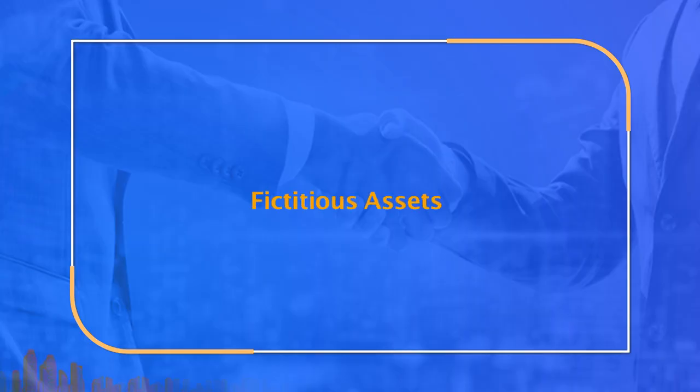Another class of assets is called fictitious assets. Fictitious assets have no physical existence or realizable value, but the company shows them as a cash expenditure in the books of accounts. They are a part of the asset side in the balance sheet and are expenses or losses which have not been written off during the accounting period of their occurrence. Examples of fictitious or intangible assets are patents, preliminary expenses, and debit balance of profit and loss account.